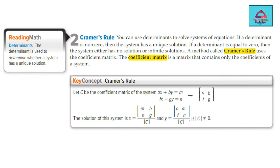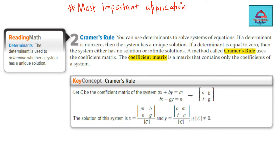Let's understand Cramer's rule, which we use to solve questions on determinants. This is again a second application and this is an answer to your question of why you are learning matrices. The first application you saw in our last video was using the determinant formula to calculate the area of a triangle, and the second and most important application you are learning today is Cramer's rule. So what is Cramer's rule? Let's try to understand.